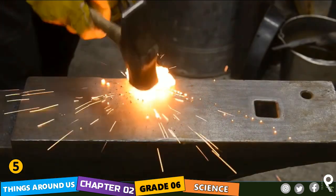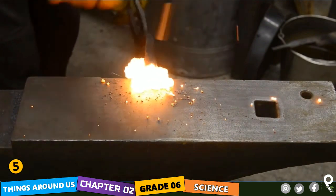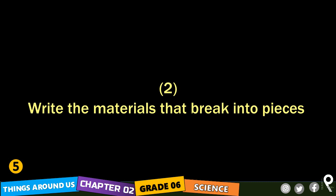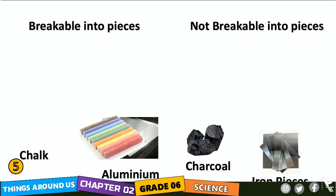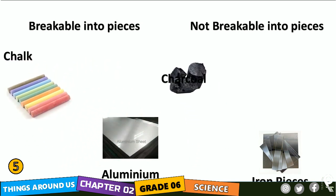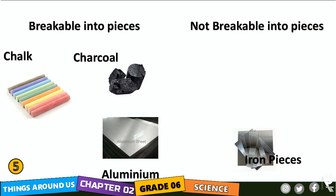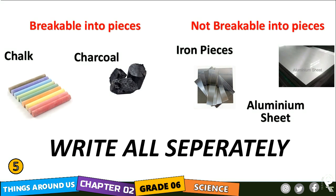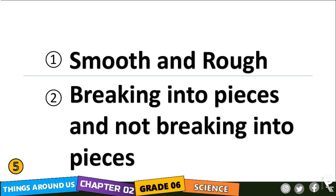The second activity is beating them. When you beat the materials with a hammer, write down the materials that break into pieces. Take a piece of chalk or charcoal — when you beat it, it will break into pieces. But iron or aluminium will not break into pieces. Write those things separately. The first activity was about smooth and rough; the second is about breaking into pieces and not breaking into pieces.